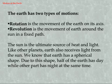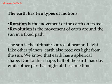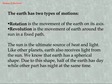The Sun is the ultimate source of heat and light. Like other planets, Earth also receives light from the Sun. We know that Earth has a spherical shape. Due to this shape, half of the Earth has day while the other part has night at the same time.